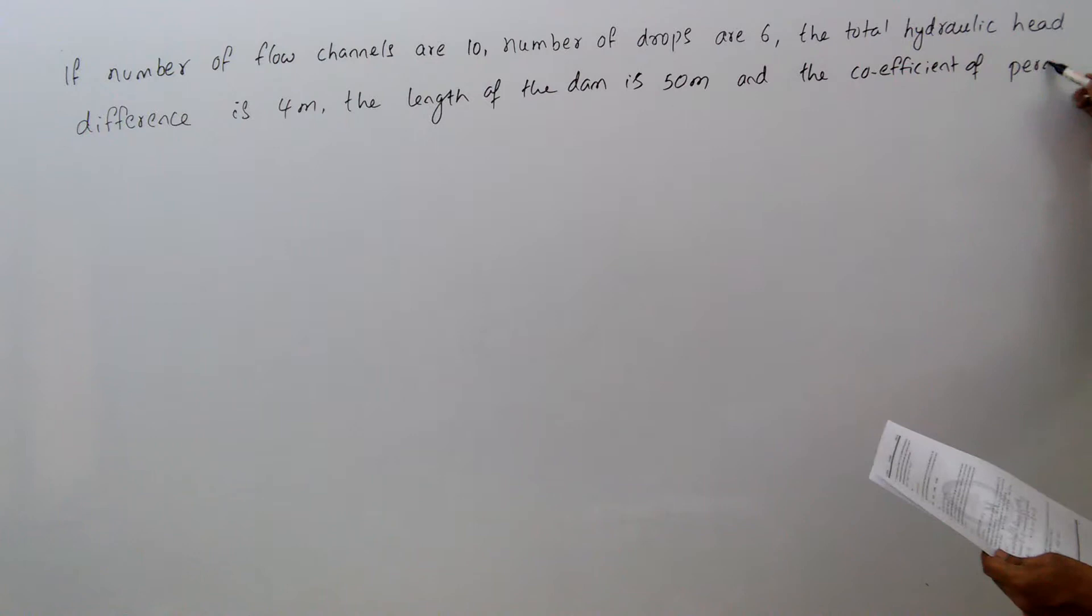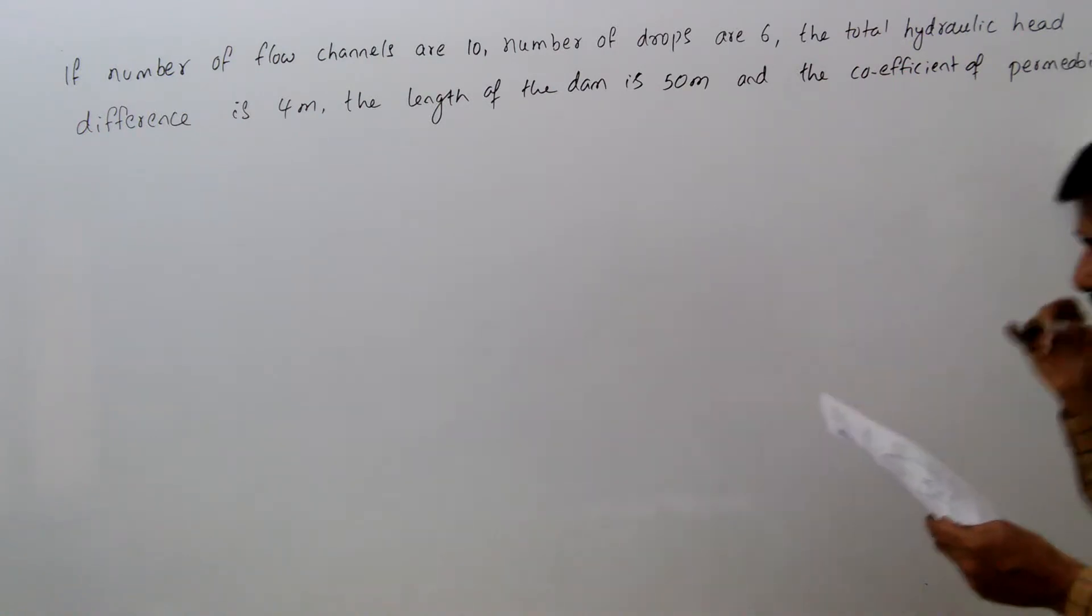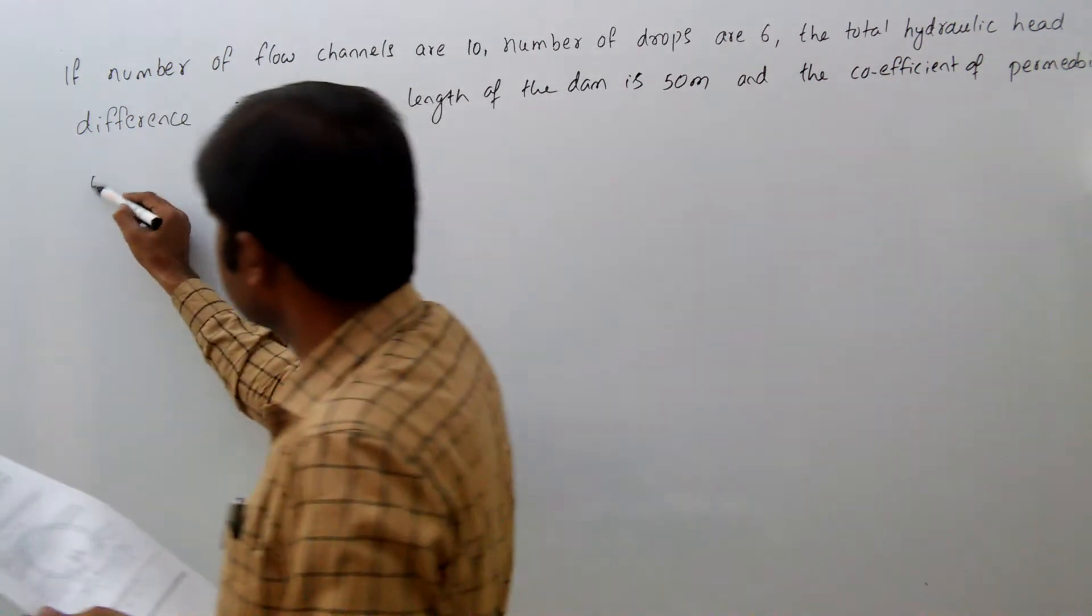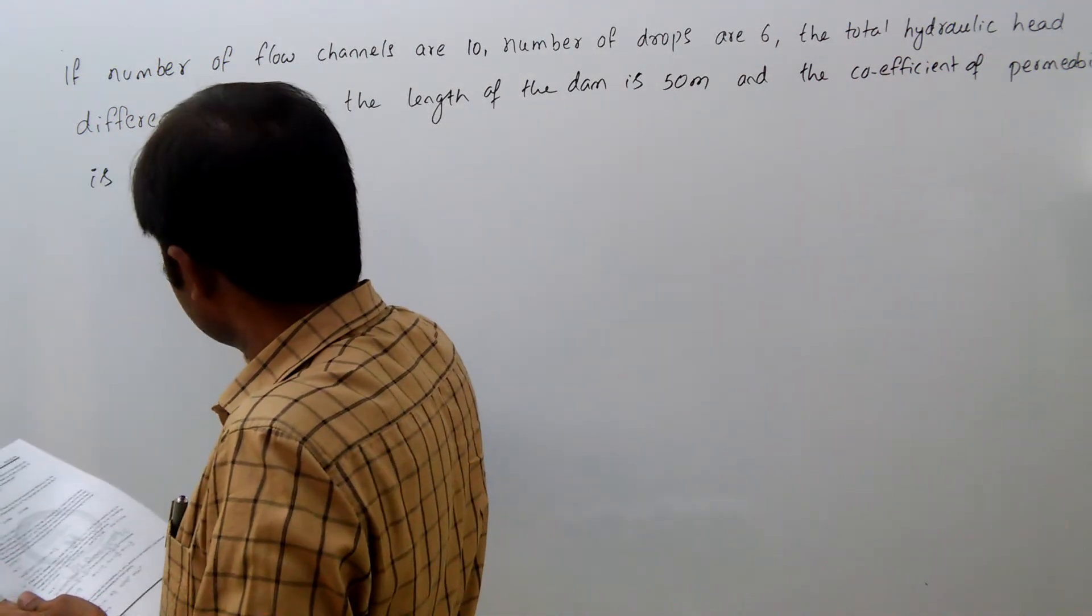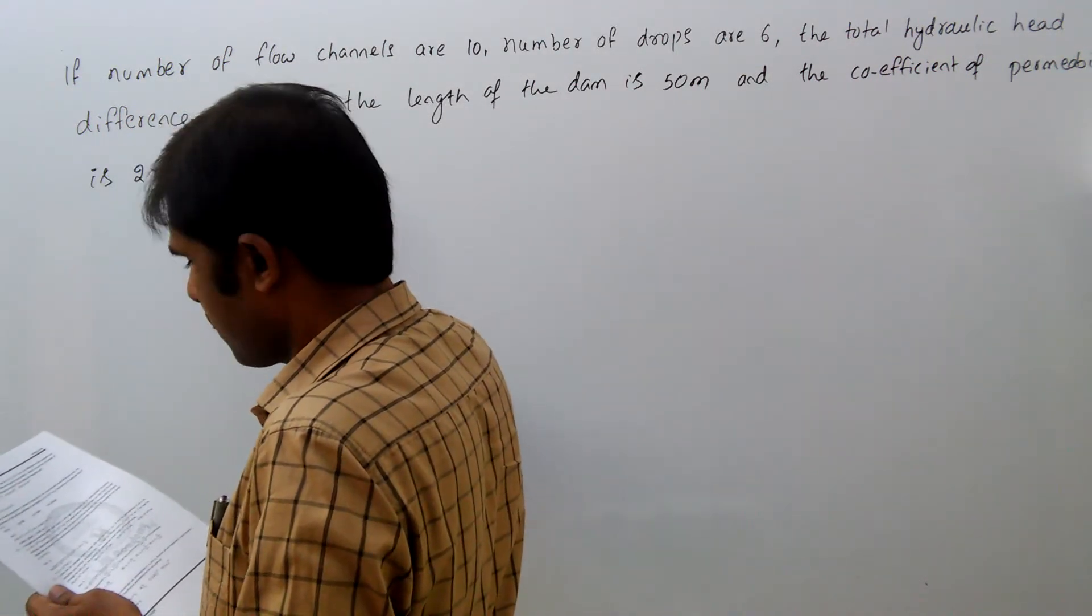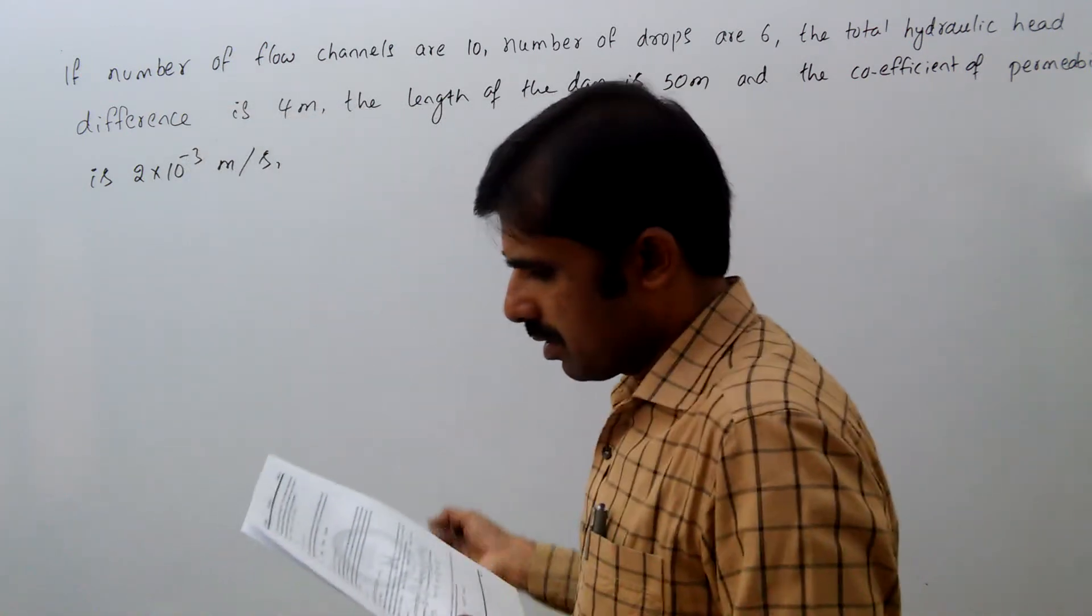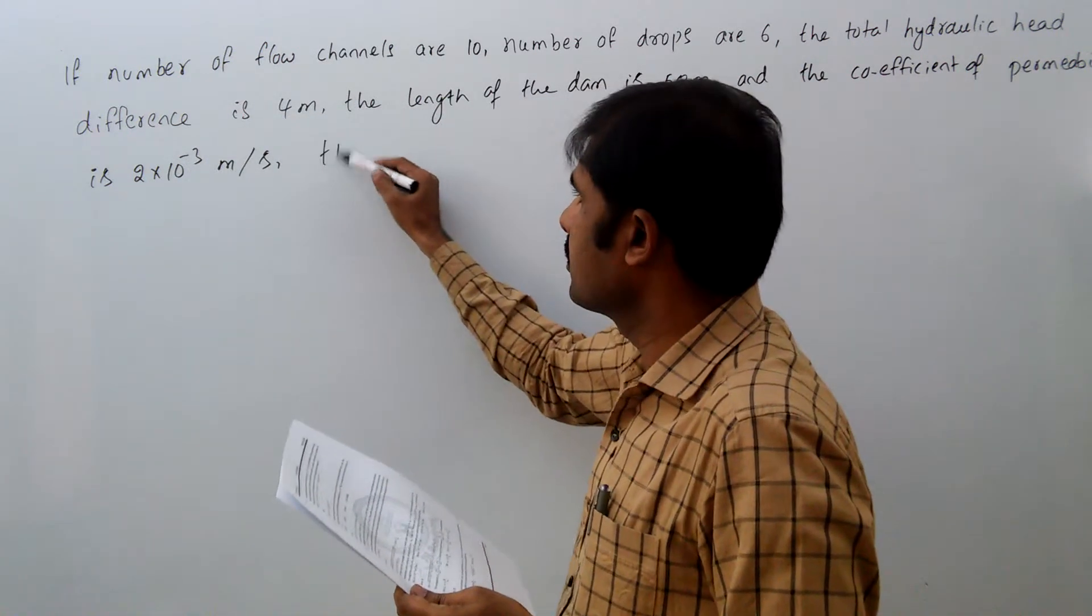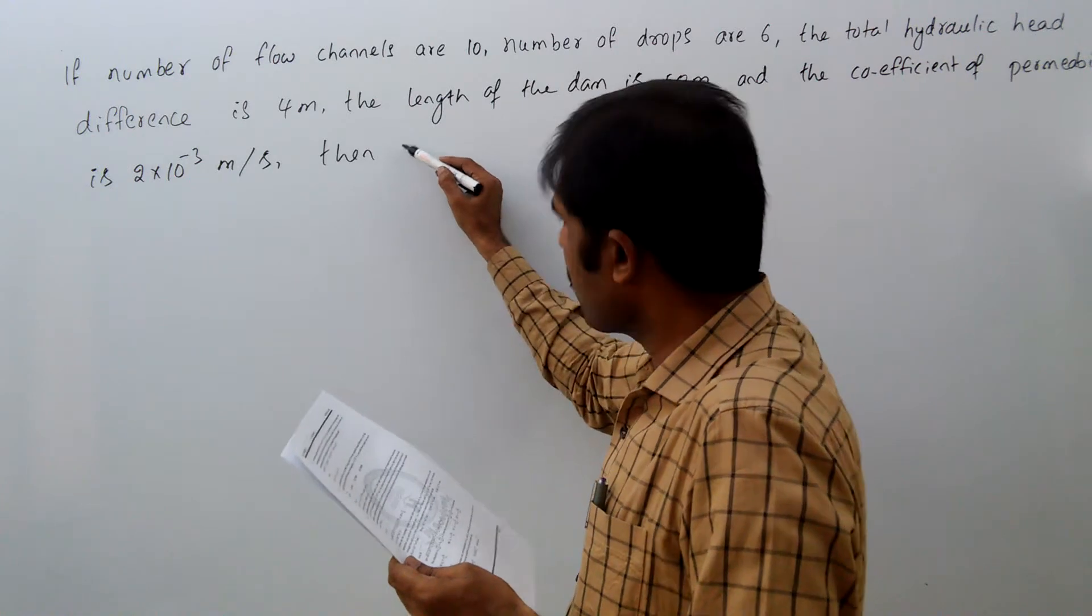is 2×10^-3 meters per second, then the loss of water